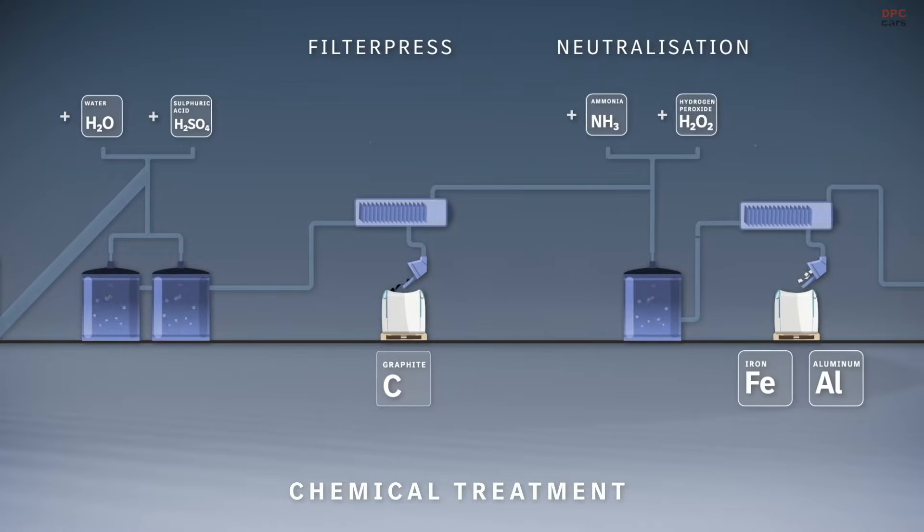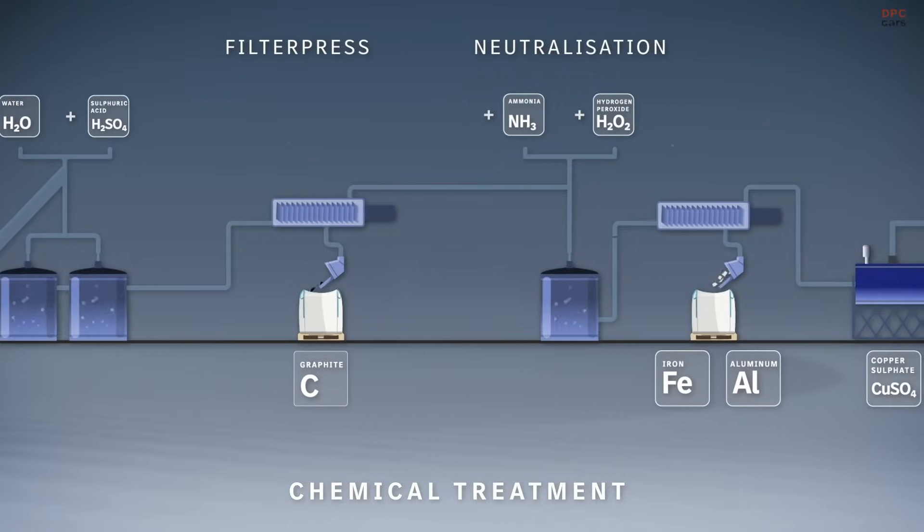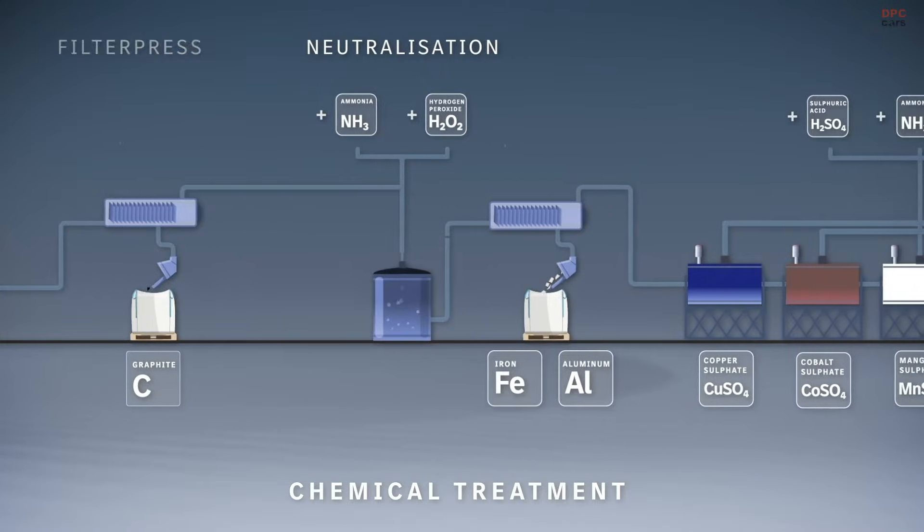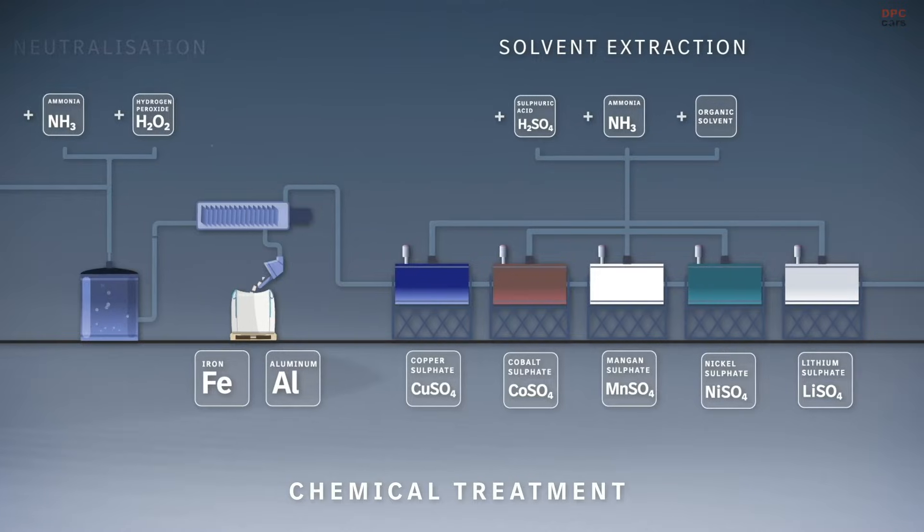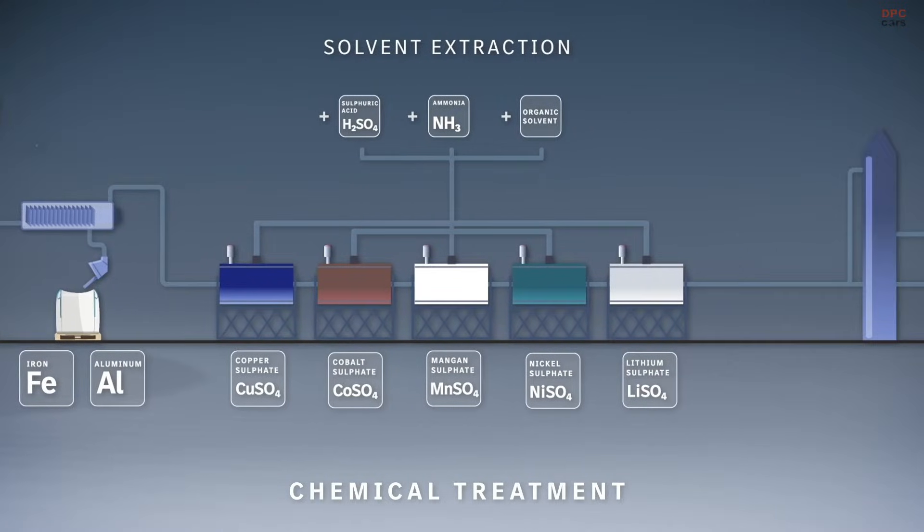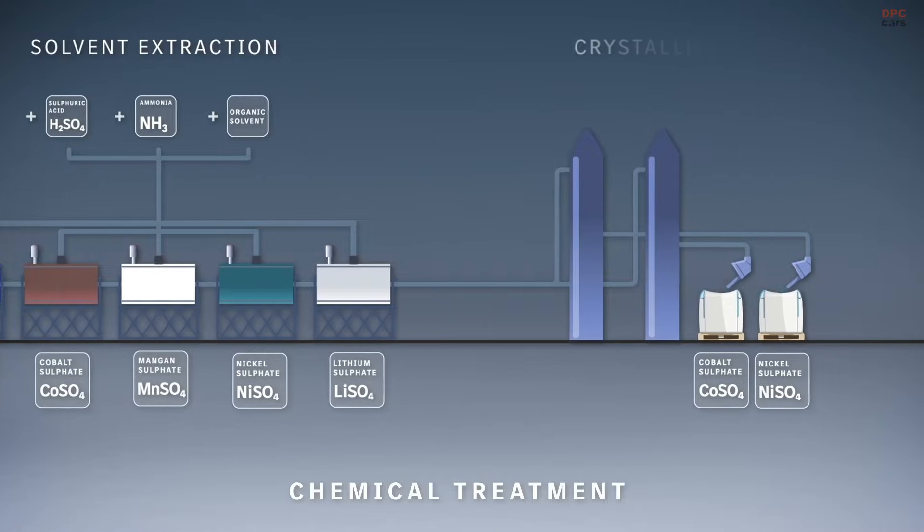The precipitated iron and the aluminum components are treated in the same way. The valuable raw materials such as copper, cobalt, manganese, nickel, and lithium are recovered one after the other in a multi-stage chemical separation process.